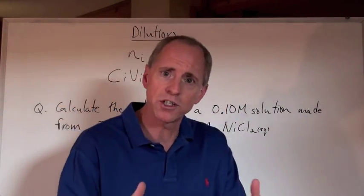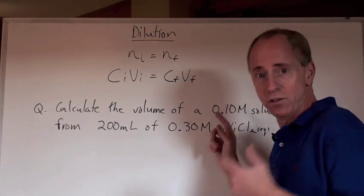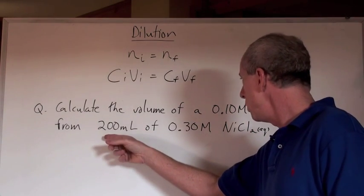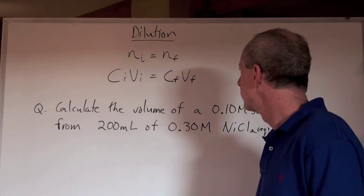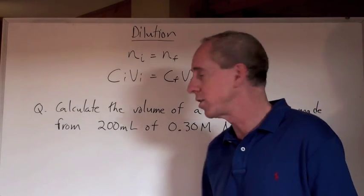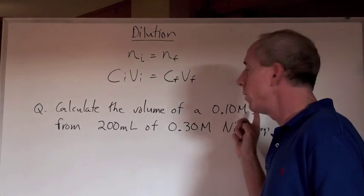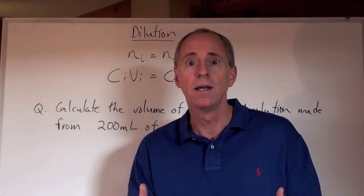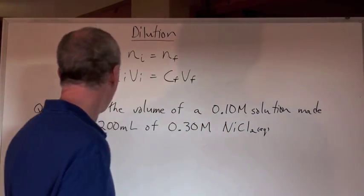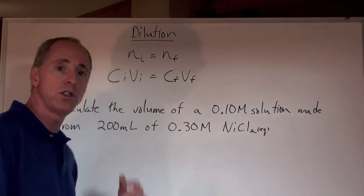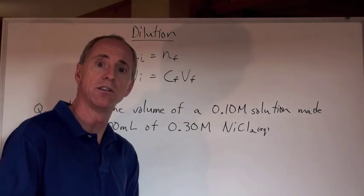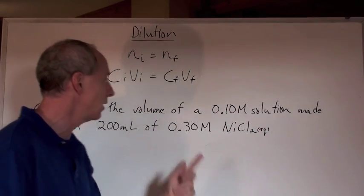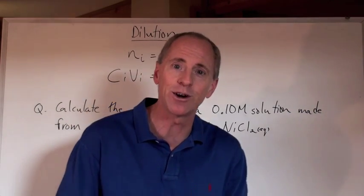Now, alright, so here's a question. Calculate the volume of a 0.1 mole per liter solution made from 200 milliliters of 0.3 mole per liter nickel 2 chloride.